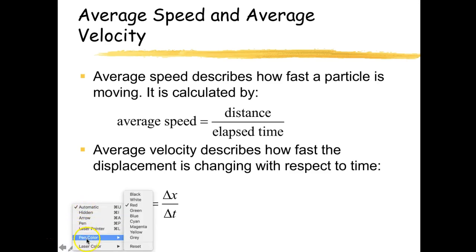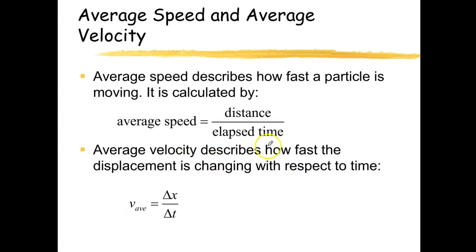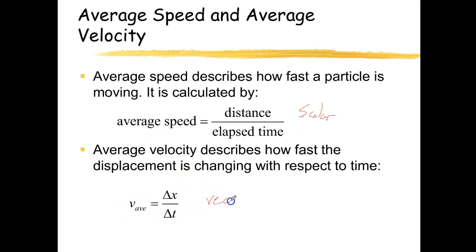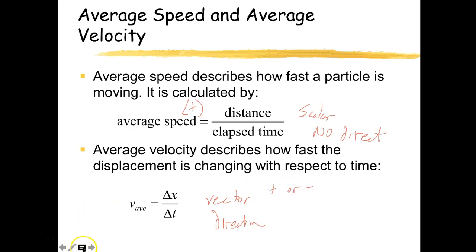Average velocity is how fast something is changing with respect to time. Speed is a scalar — it has no direction and will always be positive. Average velocity is a vector, which means it has direction and can be either positive or negative. That's really the big difference between the two.